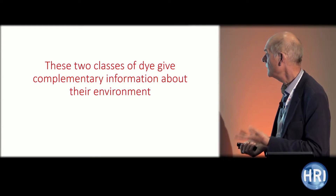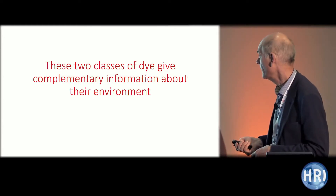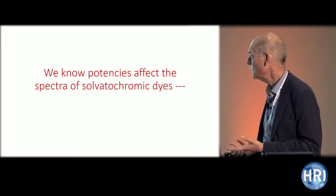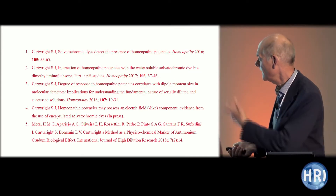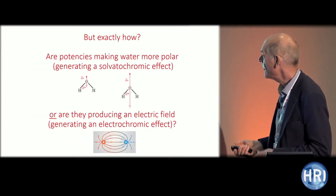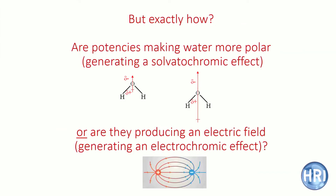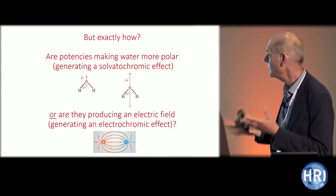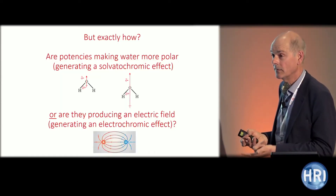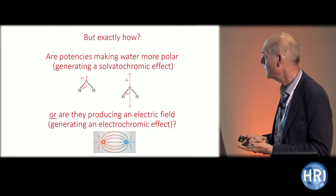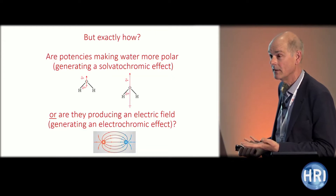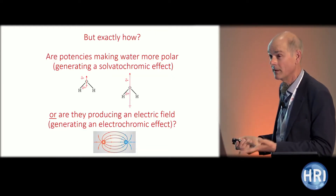These two classes of dye give complementary information about their environment. We know that potencies affect the spectra of solvatochromic dyes. The real question, looking at that first initial step, is: are potencies making water more polar — generating a solvatochromic effect — or are they producing an electric field — generating an electrochromic effect? Solvatochromic dyes respond to both solvent polarity and an electric field, so they're both electrochromic and solvatochromic. If we get the conditions right, we'll get a really interesting answer.